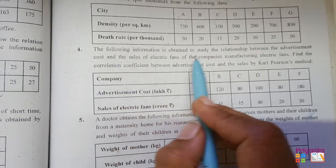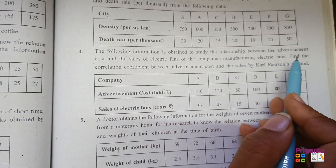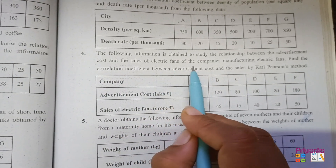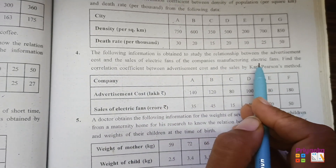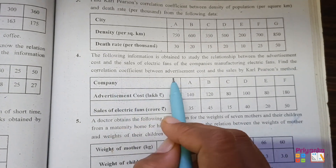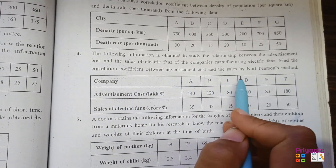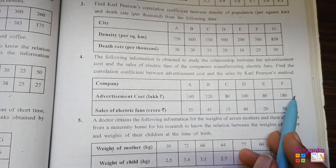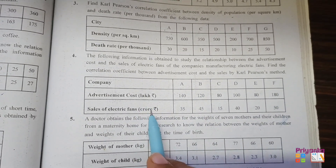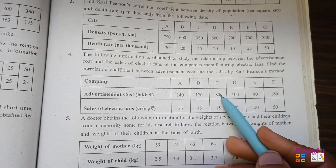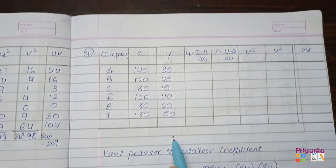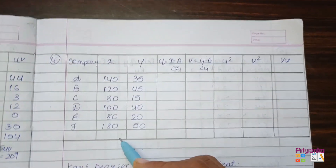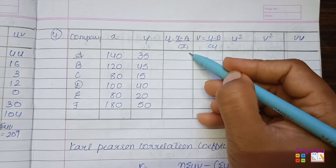Question 4: The following information is obtained to study the relation between the advertisement cost and the sales of electric fans of a company manufacturing electric fans. Find the correlation coefficient between advertisement cost and the sales by Karl Pearson's method. The companies, advertisement cost, and sales of electric fans are given. Since the numbers are quite big, we are using the UV formula.